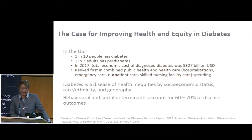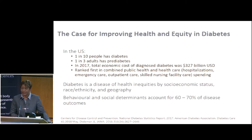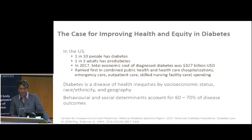Very importantly, diabetes is ranked number one among all health care conditions in the U.S. in combined public health and health care spending. For health care, this includes hospitalizations, emergency, and other types of care for people with diabetes.